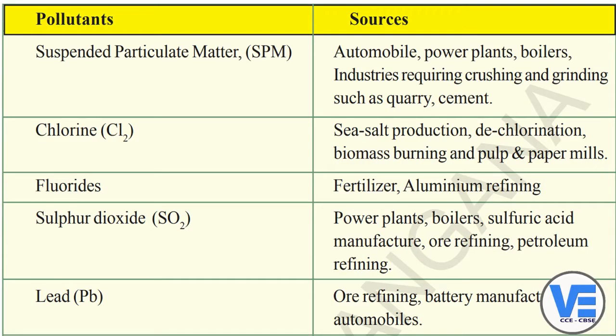The first pollutant is Suspended Particulate Matter, also called SPM. The sources of SPM are automobiles, power plants, boilers, and industries requiring crushing and grinding such as quarries and cement plants. Where stones are crushed to powder, these particles get into the air and pollute it. This also happens in automobiles, power plants, boilers, and crushing/grinding industries.